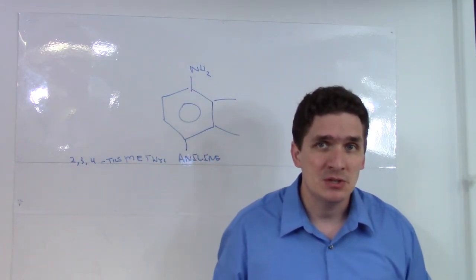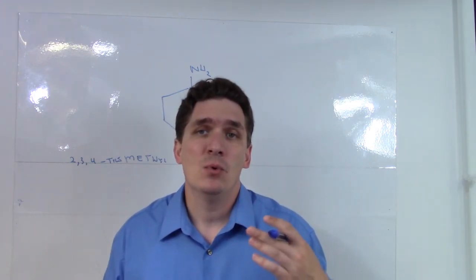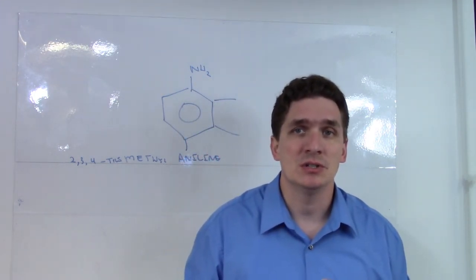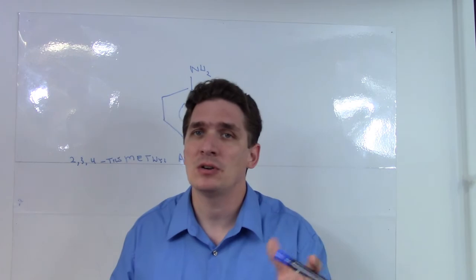And then if you've only got one substituent on the ring, you can use the ortho-meta-para. If you have more than one, you've got to do this traditional naming system, which hopefully by this point you're already familiar with.